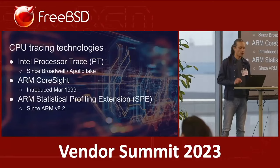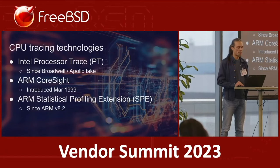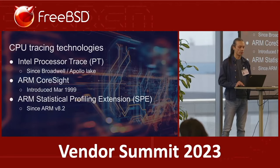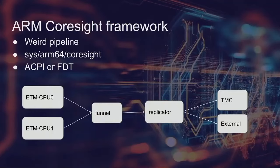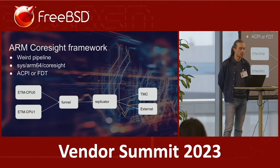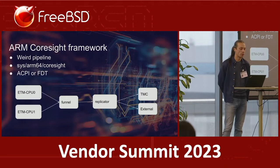I have only done support for ARM CoreSight. Intel Processor Trace and Statistical Profile Extension are currently what contributors to the HWT framework are looking at. The CoreSight subsystem is quite large — it did require writing a separate framework just for CoreSight, because it consists of multiple components. There are several devices, each requiring a separate driver. These devices are attached on ACPI or FlattenedDeviceTree bus, and every device is described in your device tree source file or ACPI table.